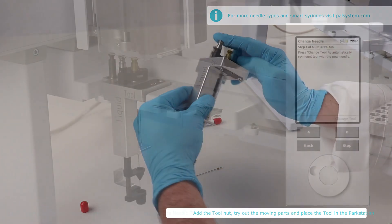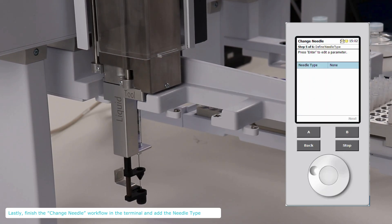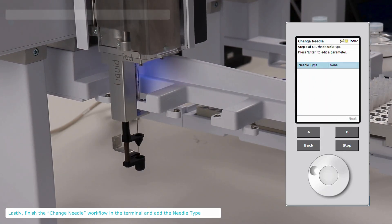Put back the tool with the new needle. Last step, follow the next step in the terminal to finish the change needle workflow. Mount the tool and add the needle type as requested.